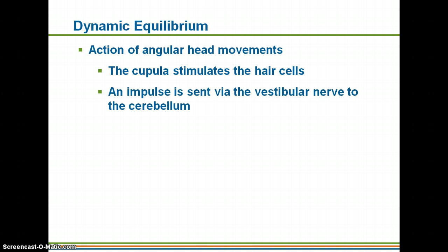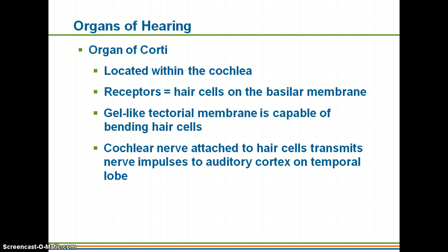Now that we've finished talking about equilibrium, we'll move on to the organs of hearing. Within the inner ear, you have the organ of Corti, located within the cochlea. Similar to equilibrium, you have receptors with hair cells found on the basilar membrane. A gel-like tectorial membrane bends those hair cells, and whenever the hair cells are bent, the cochlear nerve transmits an impulse to the auditory cortex on the temporal lobe of your brain.